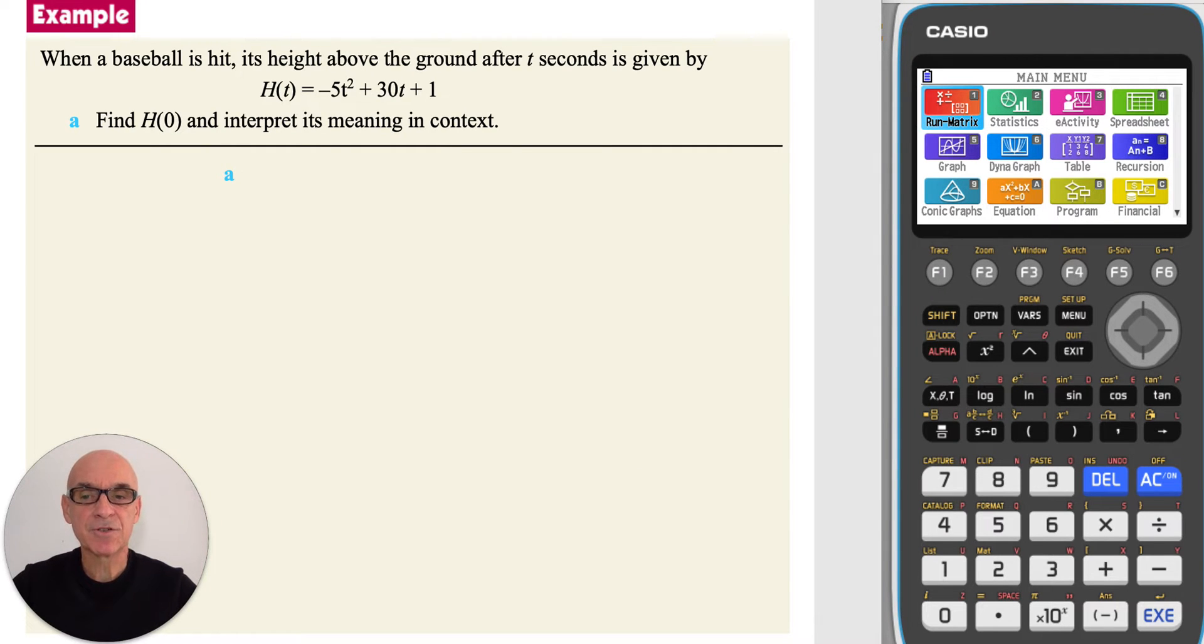In part A of this question, we're asked to find h of 0 and to interpret its meaning in context. h of 0 is the value of h at time 0.